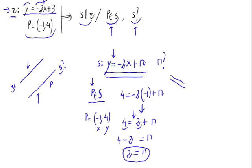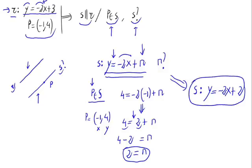So, the explicit equation for the line S would be Y equals minus 2X plus N, that is 2. This would be the straight line S parallel to R, and that goes through the point P in its explicit equation.